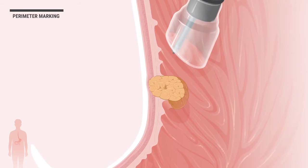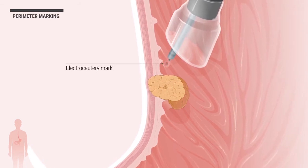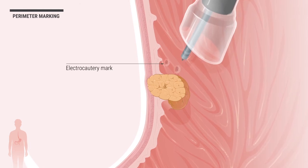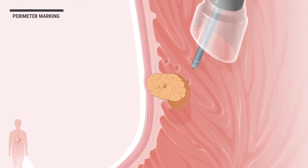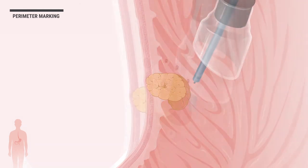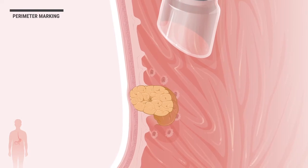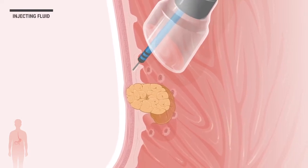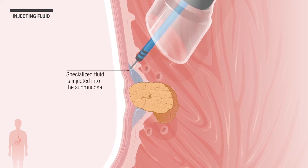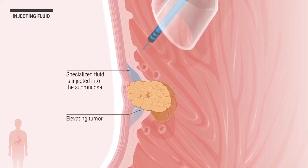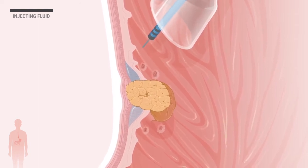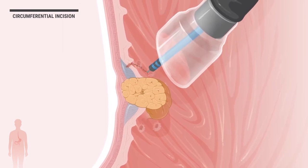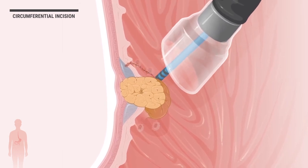First, the perimeter of the tumor is marked to define where the cut or incision will be made. Then, a specialized fluid is injected into the submucosa of the stomach wall, elevating the tumor. This allows the doctor to safely make a cut or incision along the perimeter of the tumor.